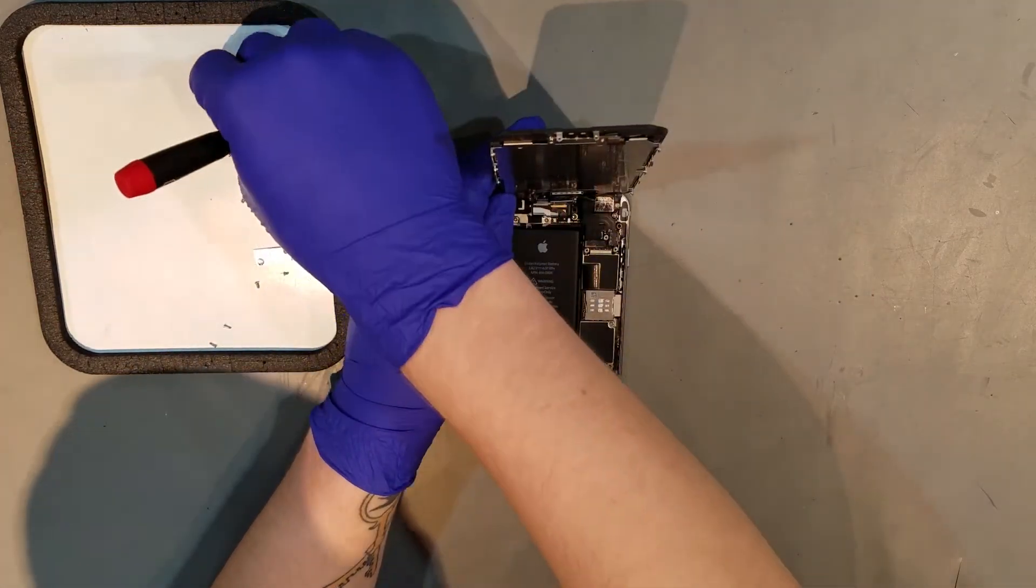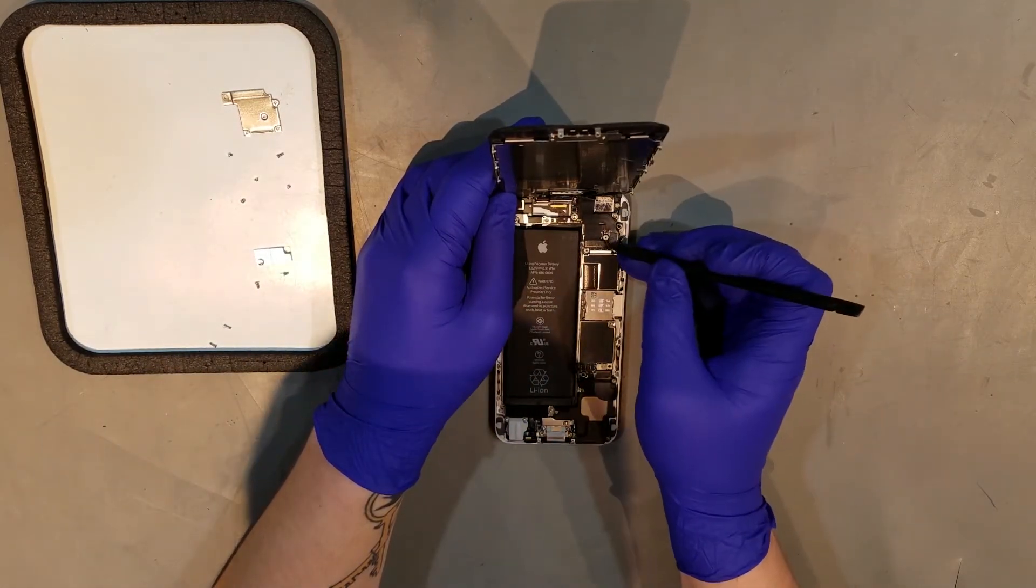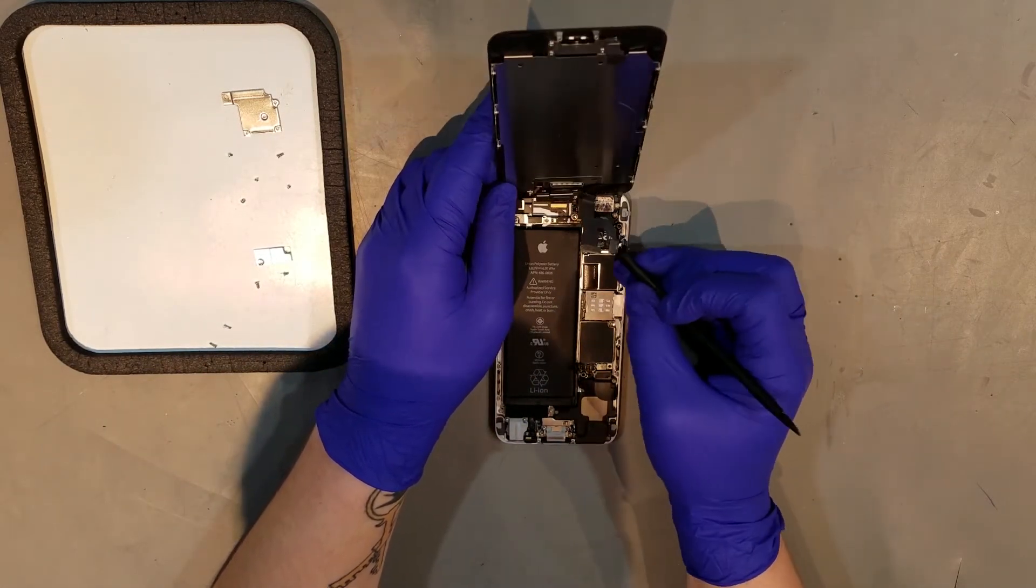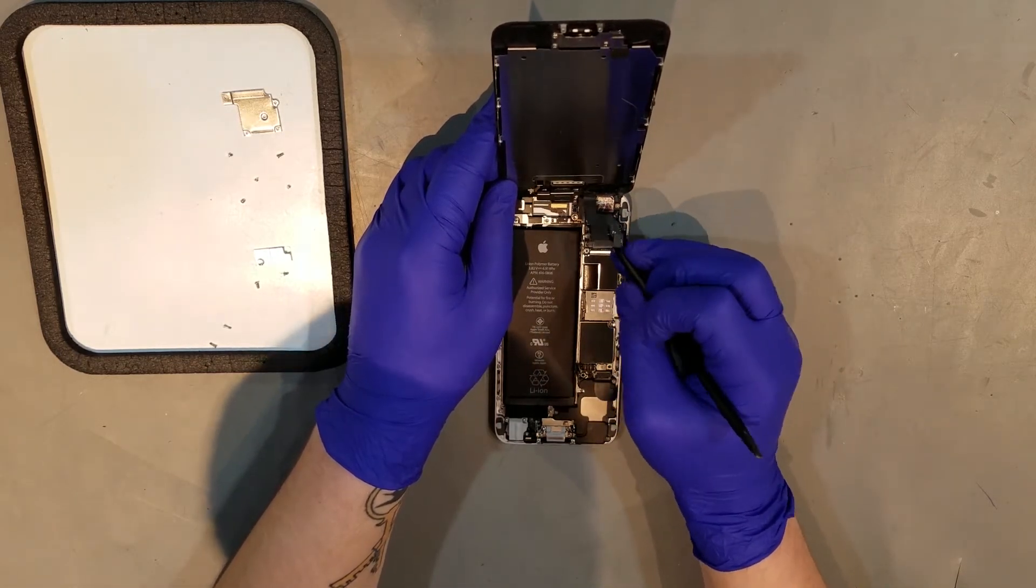After the shield is taken off, you'll need to unclip the following flex cables: the home button flex, the flex for the front camera assembly, the flex for the LCD, and the flex for the digitizer. The screen should now be free from the phone.